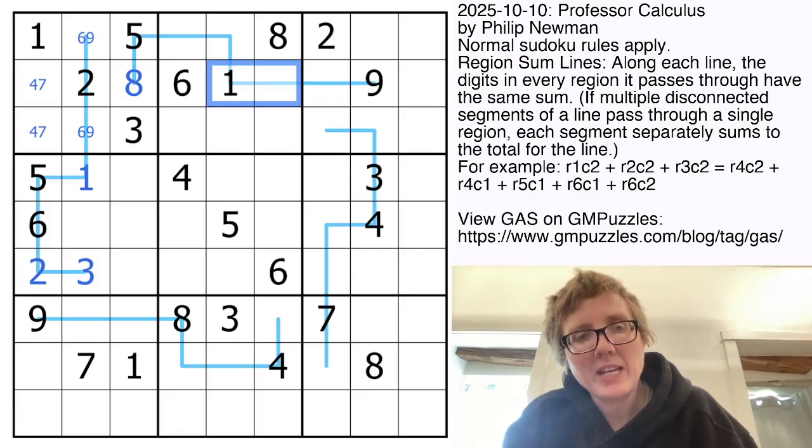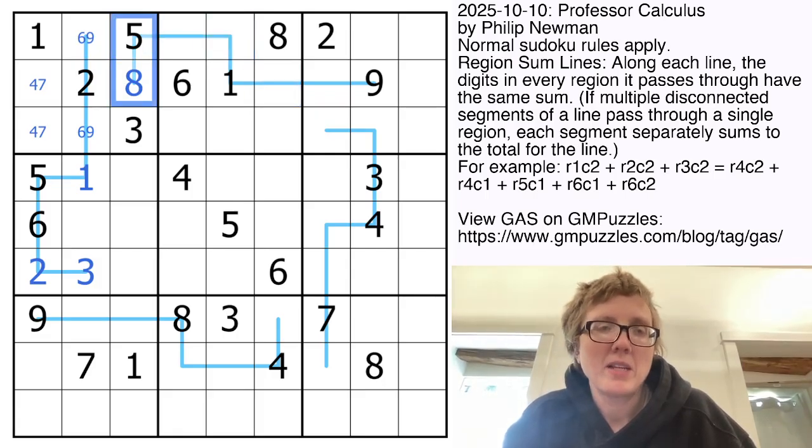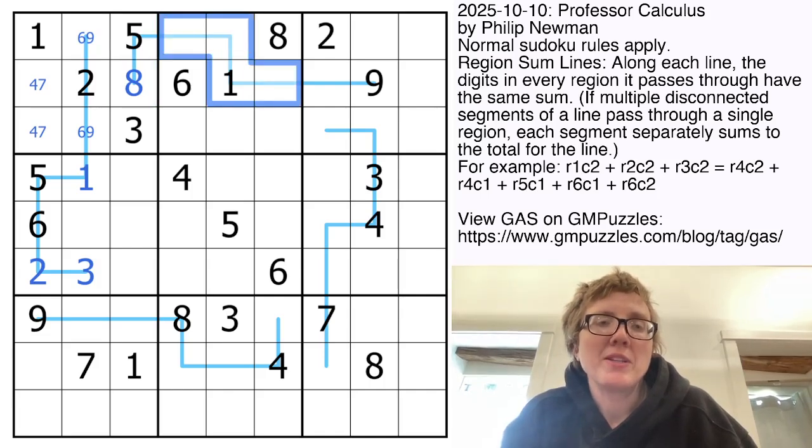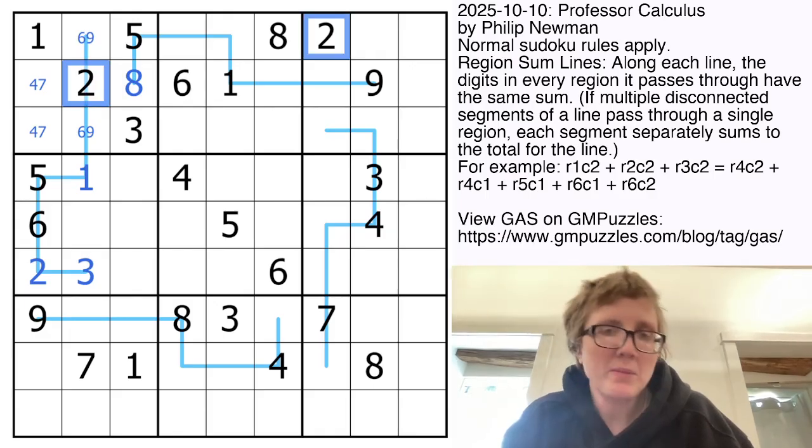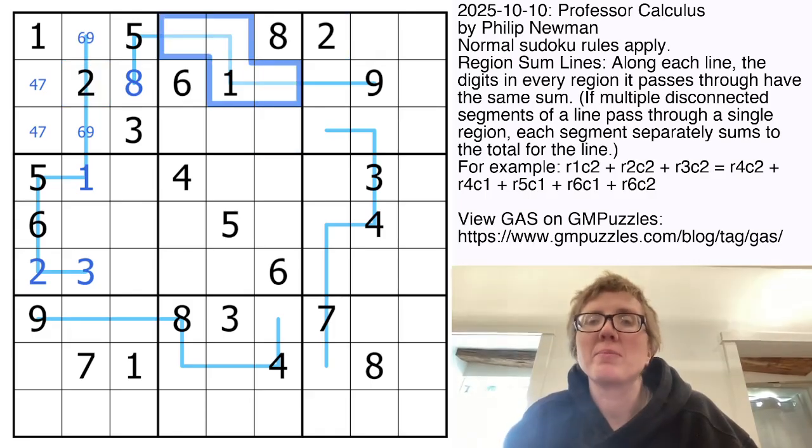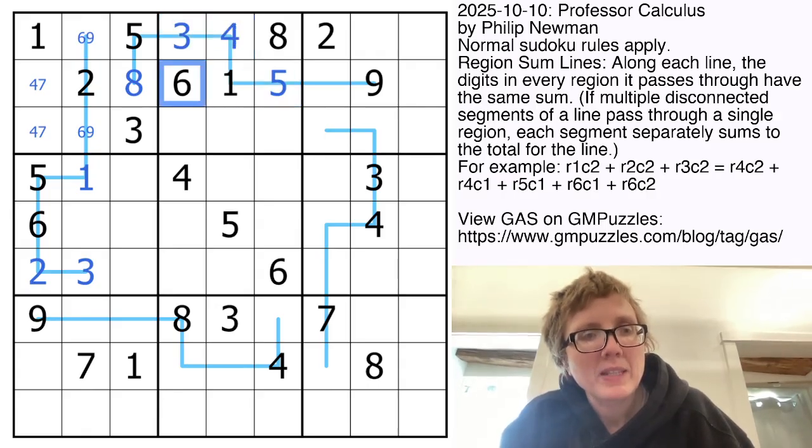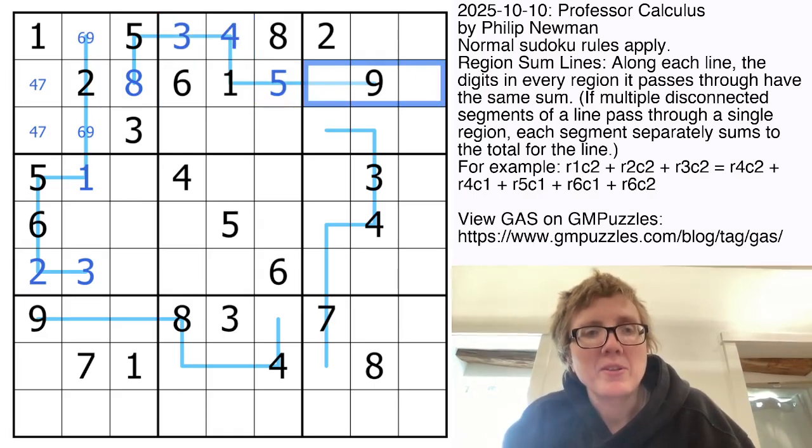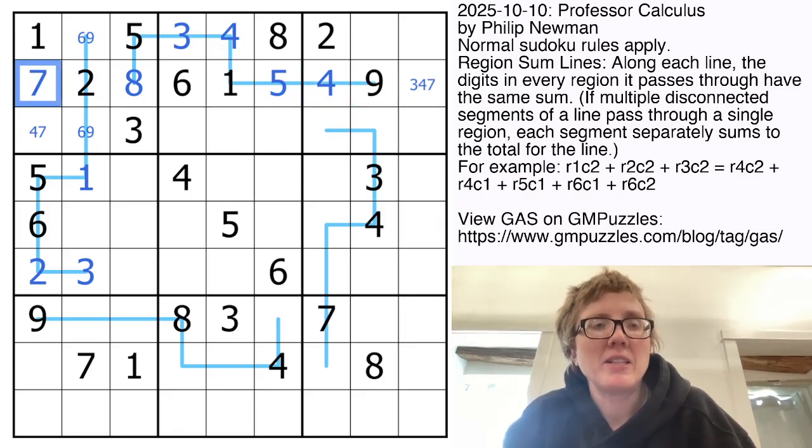So we can eliminate 8 from those cells. Now, if we look at this line, this sum is now 13, because 5 plus 8 is 13. We can't use 2 on this line just by Sudoku, because we have 2 here and we have 2 here. So the minimum we can possibly get out of this 4-cell line is 1 plus 3 plus 4 plus 5, which is exactly 13. So that must be what we have.